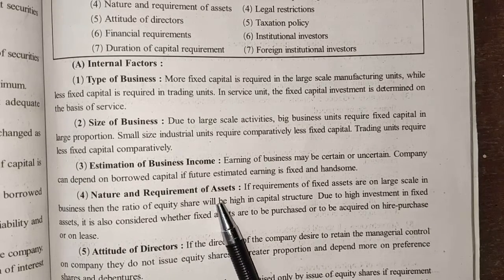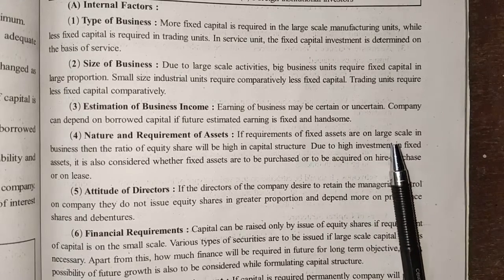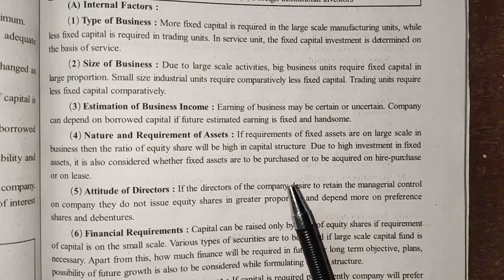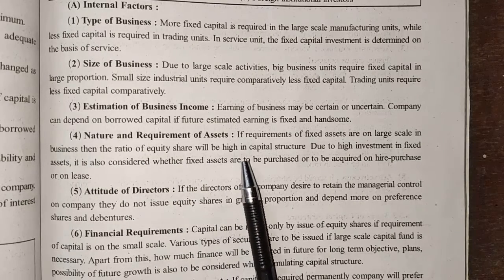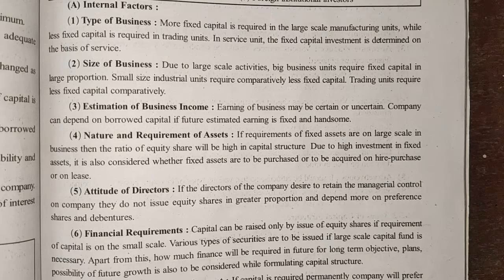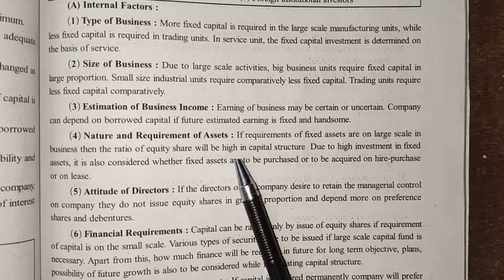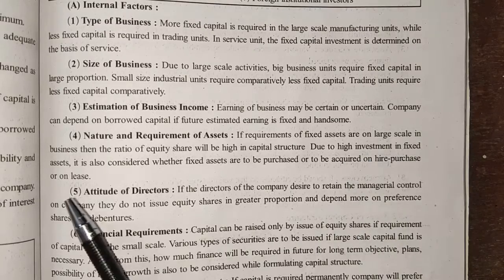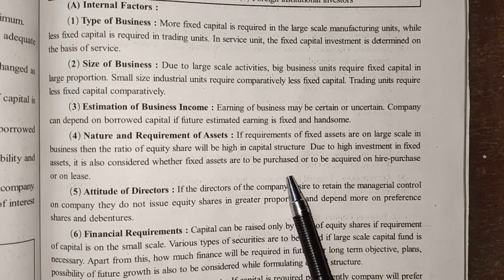Fourth internal factor: nature and requirement of assets. If the requirement of fixed assets is not on a large scale, then the ratio of equity shares will be high in the capital structure. Due to high investment in fixed assets, it is also considered whether the fixed assets are to be purchased outright or acquired on hire purchase or on a lease.